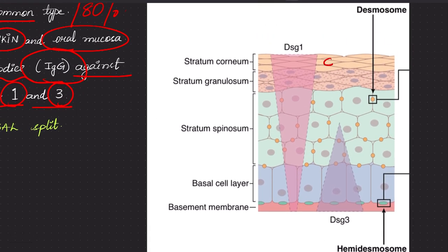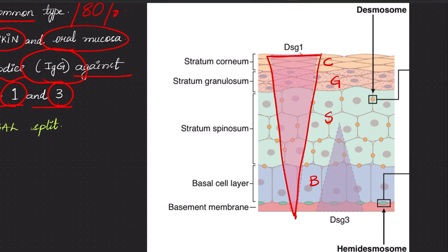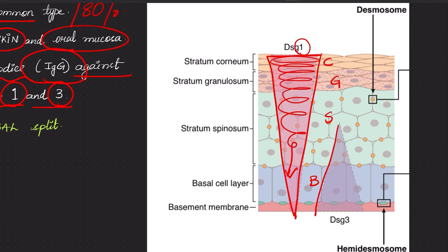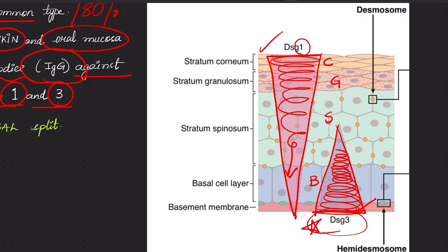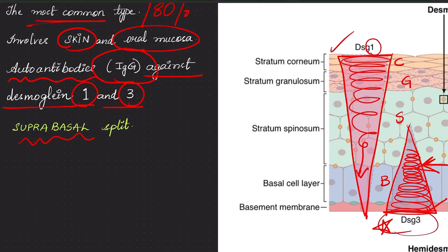Looking at the layers of the epidermis — stratum corneum, granulosum, spinosum, and basal — the Desmoglein 1 protein is highly concentrated towards the stratum corneum and its concentration decreases as you move down towards the basal layer. Whereas Desmoglein 3 is most concentrated in the stratum basale and reduces as you move upwards. In pemphigus vulgaris, autoantibodies are formed against both these proteins, but Desmoglein 3 is the major target. Since Desmoglein 3 is concentrated at the basal layer, the split is above the basal layer — this is called a suprabasal split.